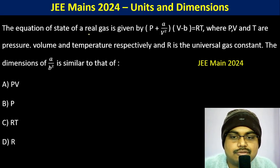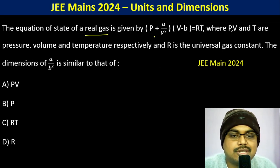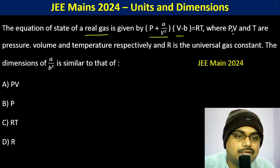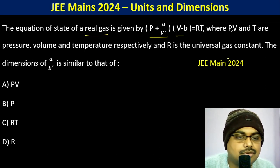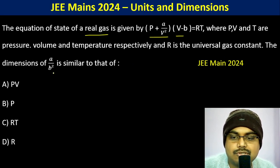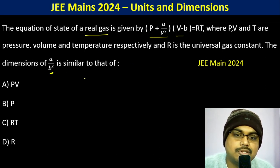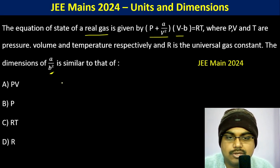The equation of state of a real gas is given. P, V, N, T represent pressure, volume, and temperature respectively, and R is the universal gas constant. The question asks for the dimensions of a divided by b squared.